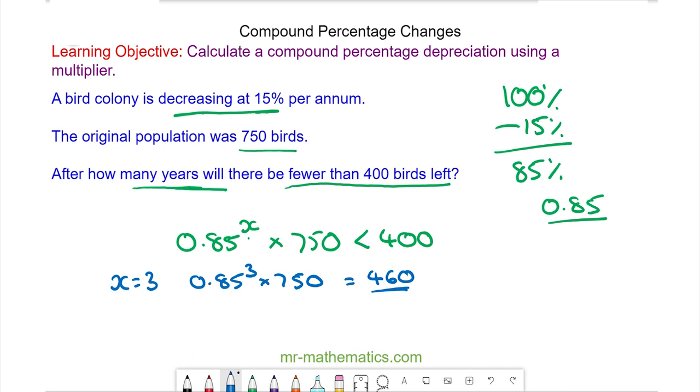So to decrease it further we can improve our initial try of 3. We'll try 4. So now we have 0.85 to the power of 4 multiplied by 750 and this is 391 birds.